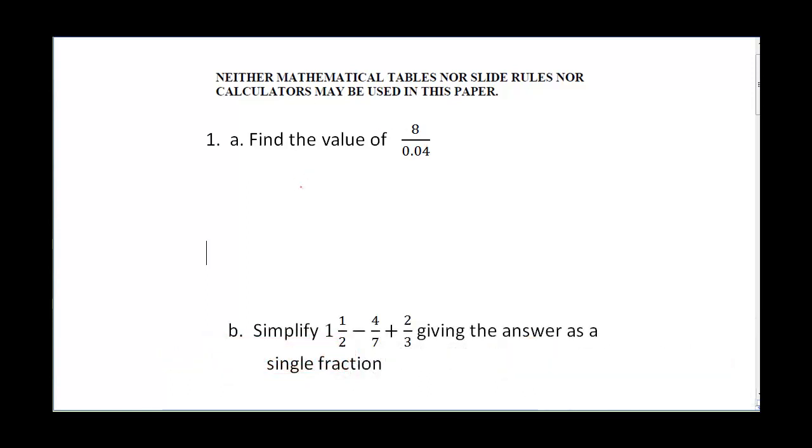Question one says find the value of 8 divided by 0.04. Now one thing you need to know is that you are not allowed to use a calculator. To easily simplify this, multiply the numerator by 100 and also multiply the denominator by 100.